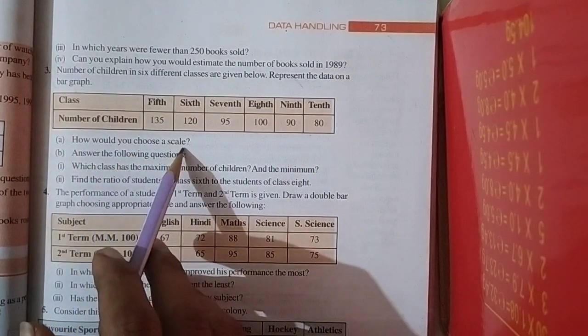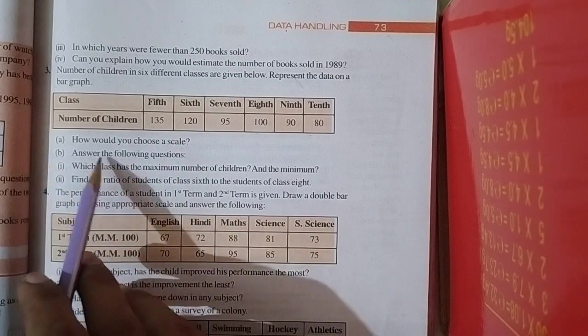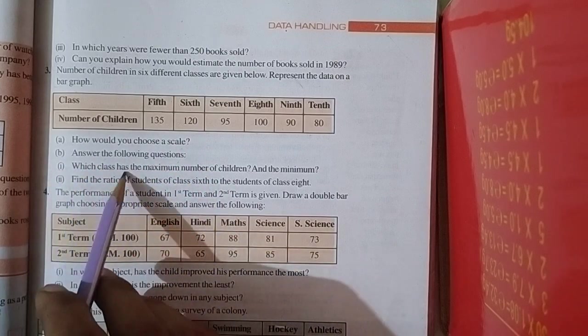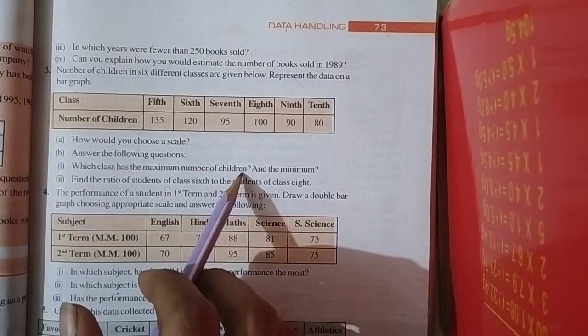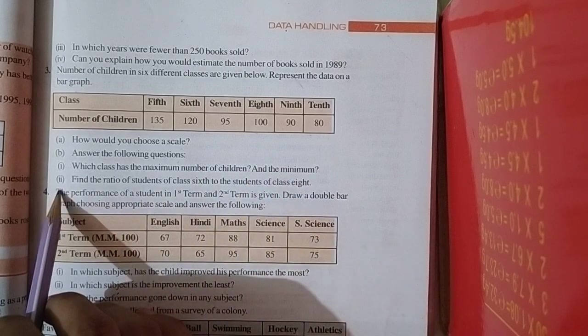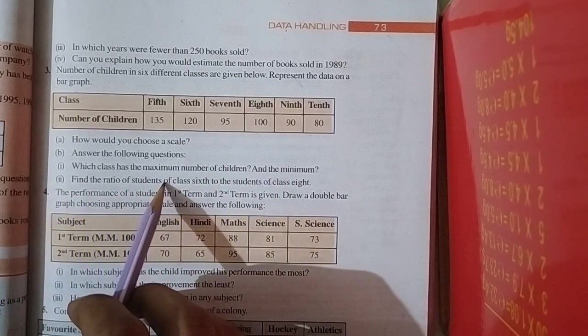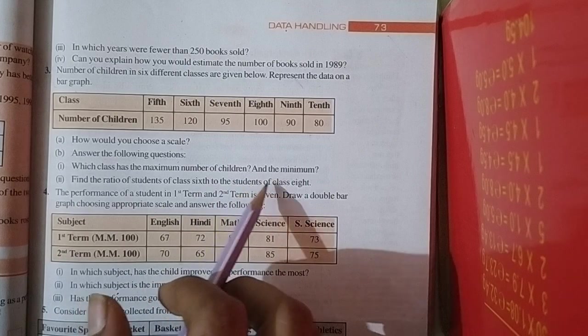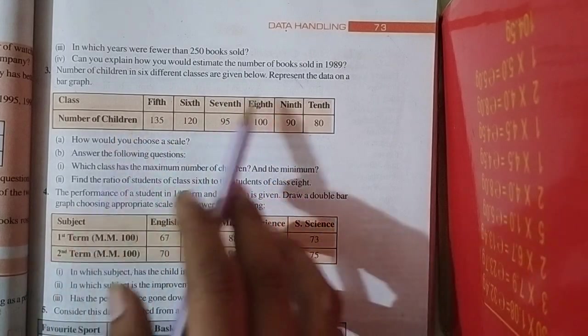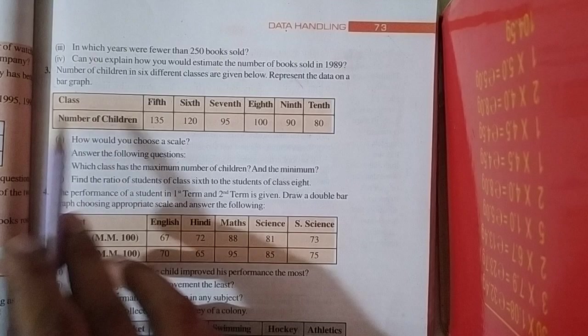So first, how would you choose a scale? Second, answer the following questions: which class has the maximum number of children and the minimum? Second, find the ratio of students of class 6th to the students of class 8th. So students, first of all, represent the data on a bar graph.